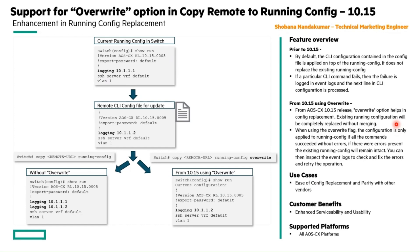When the override flag is used, the configuration is only applied to the running config if all of the operations are completed successfully. Otherwise, the existing running config is left unchanged.